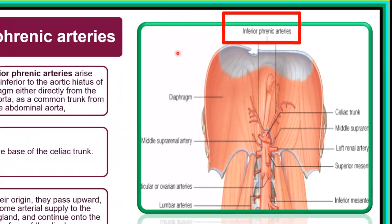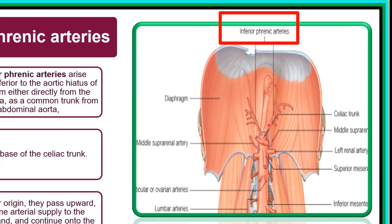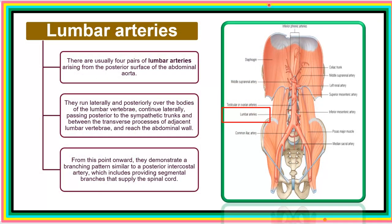The two inferior phrenic arteries come off from the abdominal aorta immediately as it enters the abdomen at the level of the T12 thoracic vertebra, and they run on the inferior surface of the diaphragm. This artery also gives off the superior suprarenal artery. The lumbar arteries branch off the abdominal aorta and run laterally both on the right and left to supply the abdominal wall.